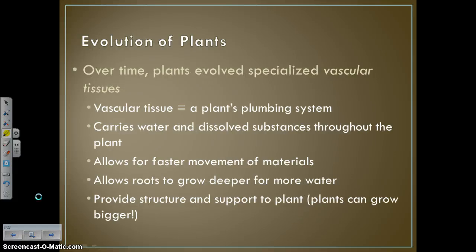The next thing to evolve were vascular tissues. Over time, plants evolved specialized vascular tissues — basically the plumbing system of a plant. These special tunnels and tissues allow water and materials to travel throughout the plant. They carry water and dissolved substances throughout the plant, which allows for faster movement of materials, roots to grow deeper for more water, and provides structure to support the plant so it can grow bigger. Vascular plants are going to be bigger than non-vascular plants.